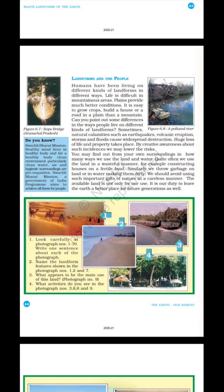Look carefully at photographs, notes 1–10, and write one sentence about each photograph. Name the landform features shown in photographs 1, 2 and 7. What appears to be the main use of this land in photograph 9? What activities do you see in photograph numbers 3, 6, 8 and 9? What type of houses do you see in photograph numbers 4 and 5? Name the water sports shown in photograph numbers 3 and 8. Name two means of transport shown in photographs numbers 1 and 10.